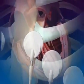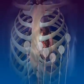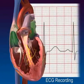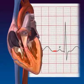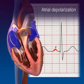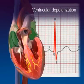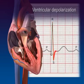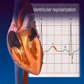The spread of cardiac electrical activity may be recorded using electrodes placed on the body surface. The recording, called the electrocardiogram or ECG, has several distinct components. The P wave corresponds to atrial depolarization. The QRS complex appears with ventricular depolarization. The T wave represents ventricular repolarization.